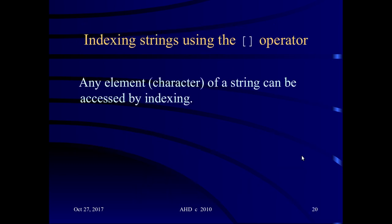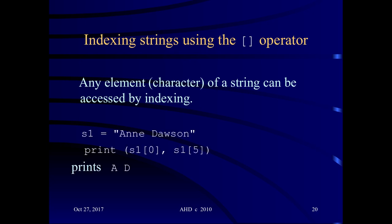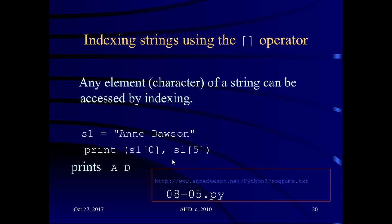Now, indexing strings using the bracket operator. Any element of a string can be accessed by indexing. Here I'm accessing index 0 and index 5. Remember, all indexes start at 0. We've used the bracket operator with lists, so you should already be familiar with it. This is program 08-05.